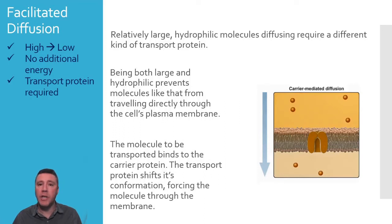Once binding has been achieved, that results in a conformational shift in the transport protein's three-dimensional structure. The protein's shape-change forces the molecule through the membrane.